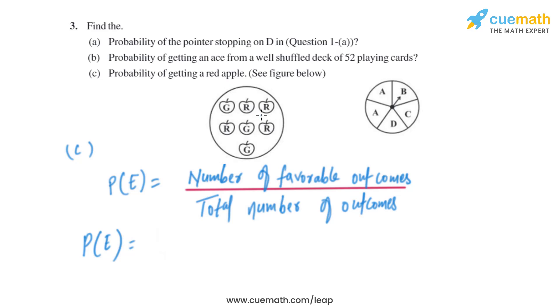Part (c): Probability of getting a red apple. Let's count how many red apples there are: 1, 2, 3, 4. So the number of favorable outcomes is 4. The total number of apples is 1, 2, 3, 4, 5, 6, 7. Therefore, the probability is 4 over 7.